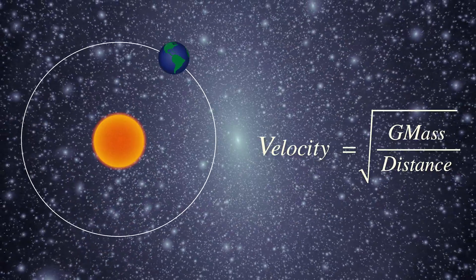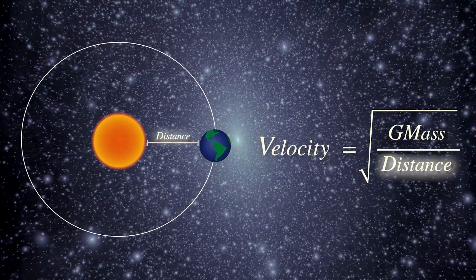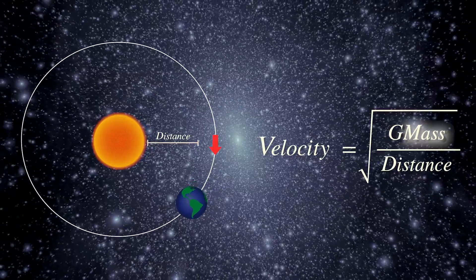For example, the velocity of the planet's rotation around the Sun is determined by their distance from the Sun and the mass contained within the planet's orbits.